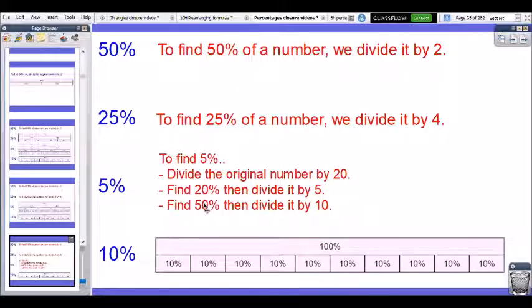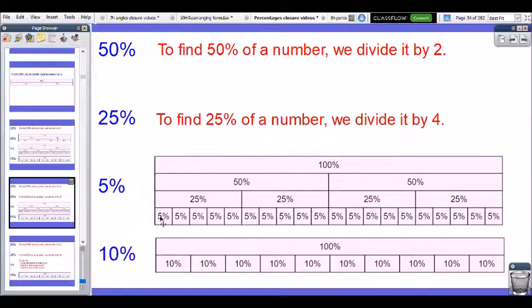To find 5%, you could take 25% and divide it by 5, because there's 5 lots of 5% in 25%. Or another way people like to do it is find 50% first and then divide it by 10, because 10 lots of 5% fit into 50%.